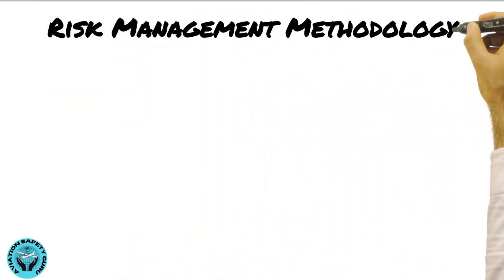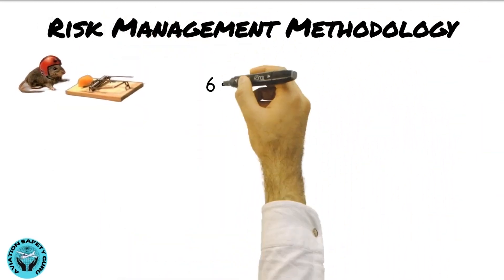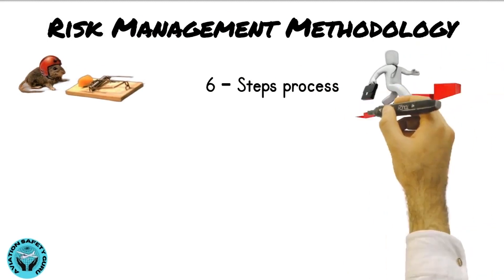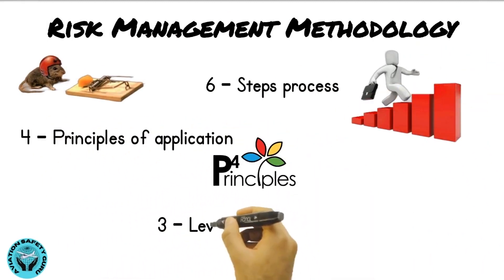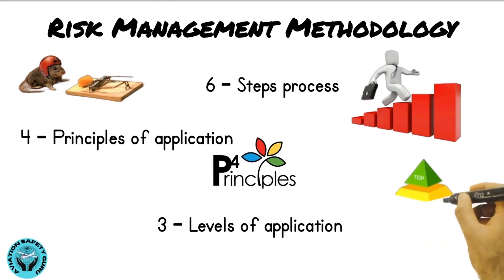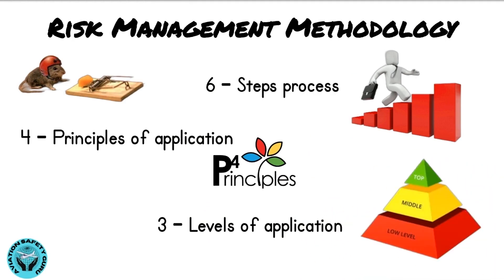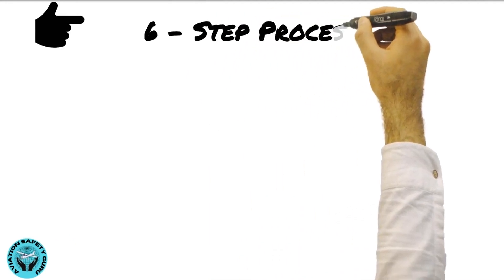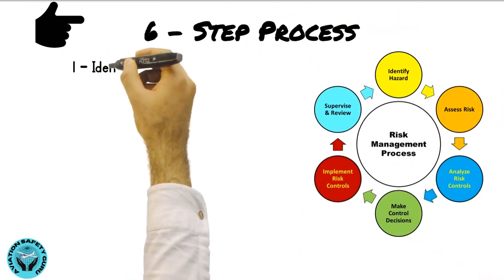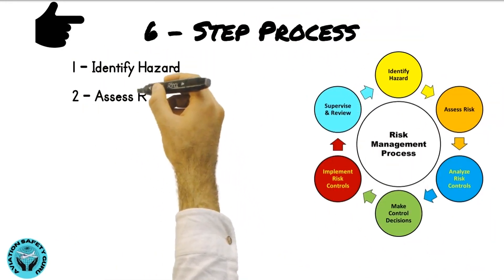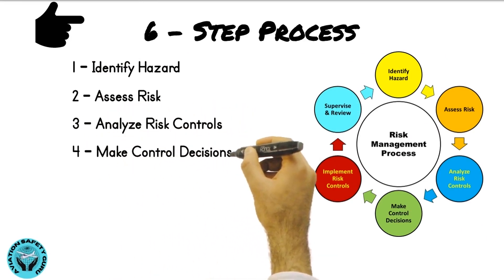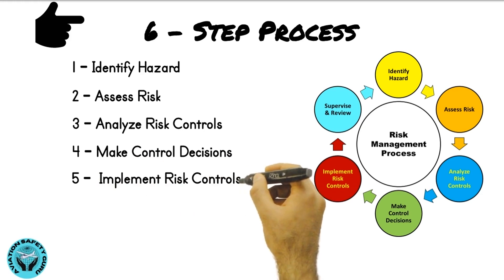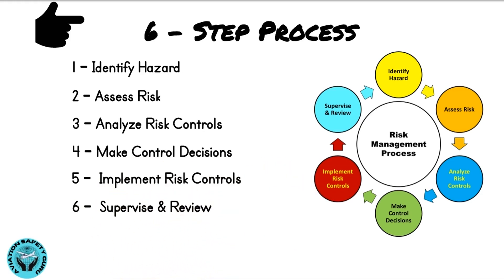Risk Management methodology comprises a six-step process, four principles of application, and three levels of application. The components of the six-step process are: identify the hazard, assess the risk, analyze risk controls, make control decisions, implement risk controls, and supervise and review.